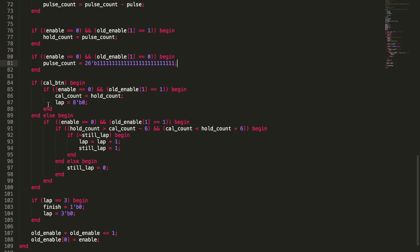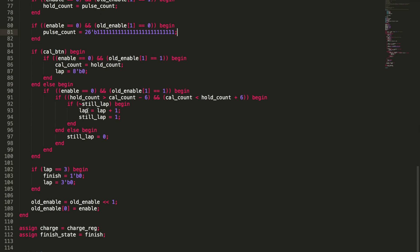This is the calibration button stuff. If the calibration button is enabled, then we're going to set the calibration count to the whole count. I will set this laps to zero. Then if it's not the calibration button, that means we're running through the actual program.